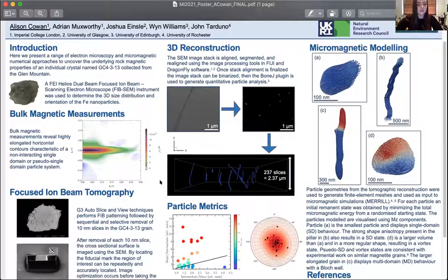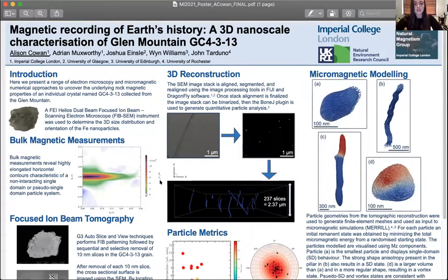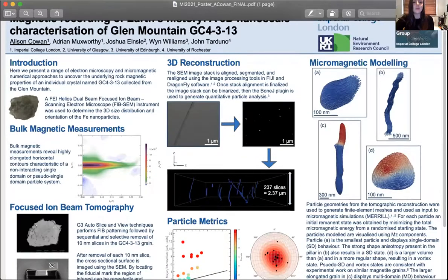So I'm going to talk you through my poster, which is on magnetic recording of Earth's history, which describes a 3D nanoscale method for characterization of a single crystal which was collected at the Glenmonton. So by using practical and theoretical approaches, it allows us to accurately determine the behavior of natural samples, which will lead to more accurate paleo-intensity estimates.